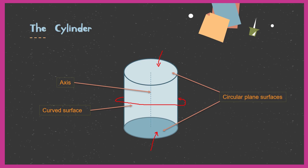To find the surface area of the cylinder, we have to find the area of the top circle, the area of the bottom circle, and the area of the curved surface part, and add them all together to get the total surface area of the cylinder.